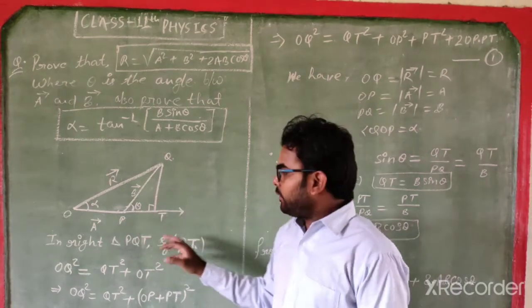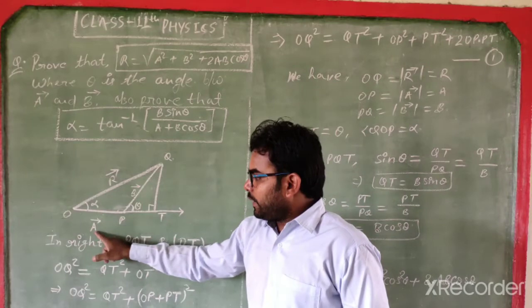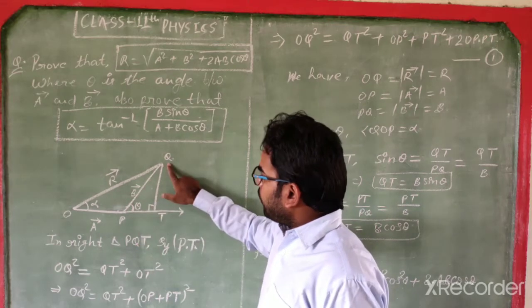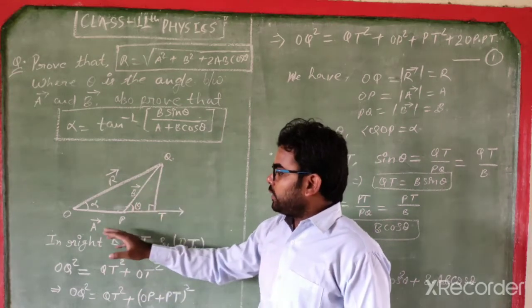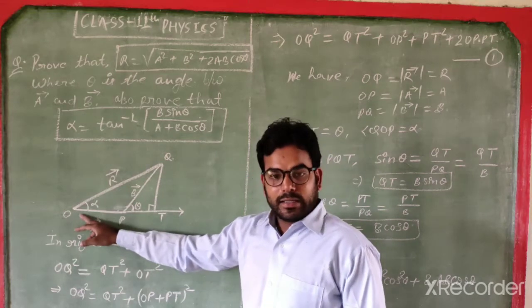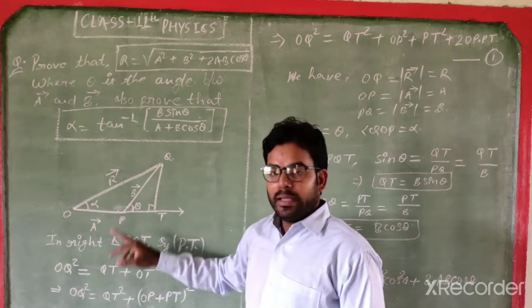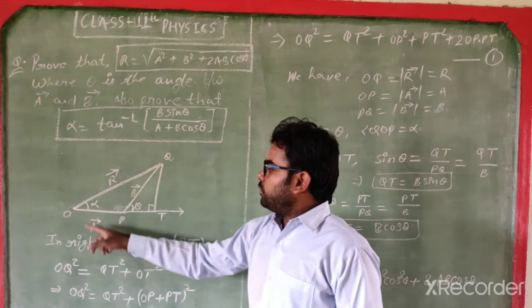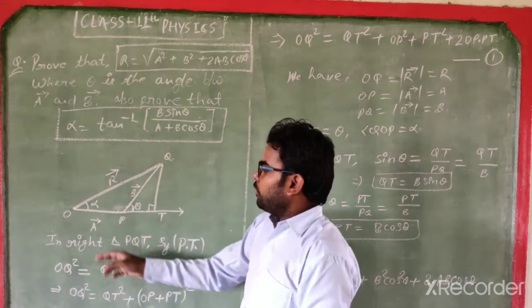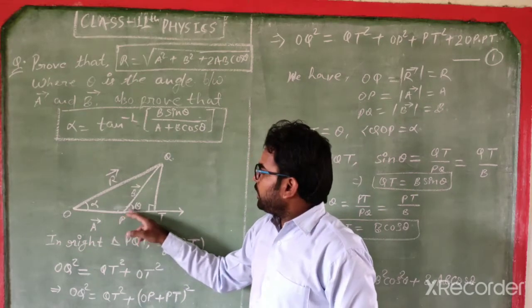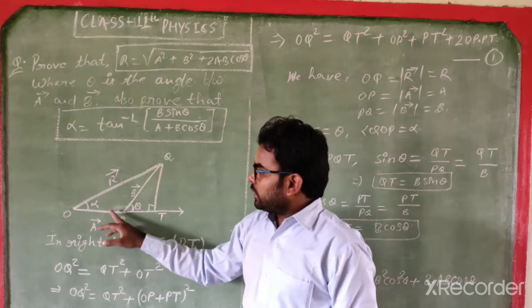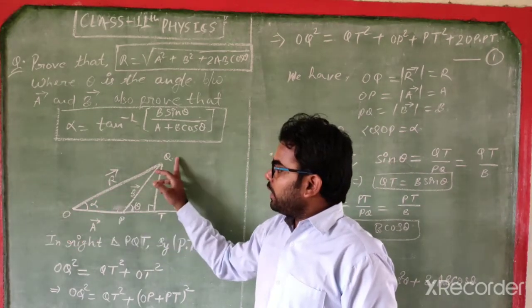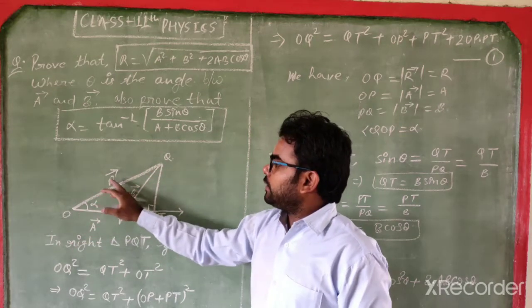You can see a diagram. In this diagram, vector A is represented by OP, vector B is represented by PQ, and the resultant vector of vector A and vector B is given by the third side of the triangle OQ. In triangle OPQ, OP represents vector A, PQ represents vector B, and the resultant vector R is given by the third side OQ.